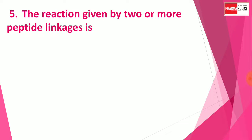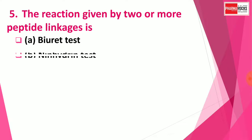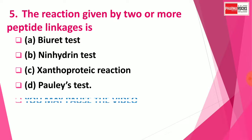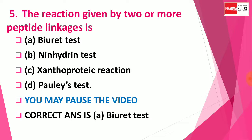Question number 5: The reaction given by two or more peptide linkages is — Option A: Biuret test, Option B: Ninhydrin test, Option C: Xanthoproteic reaction, Option D: Paulist test. You may pause the video. The right answer for this question is Option A: Biuret test. The reaction given by two or more peptide linkages is the Biuret test.